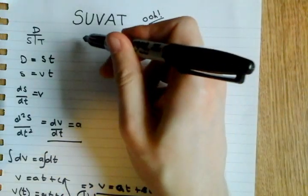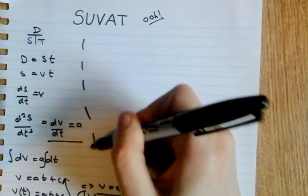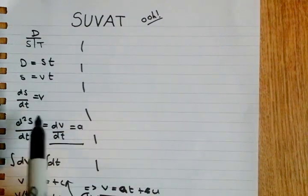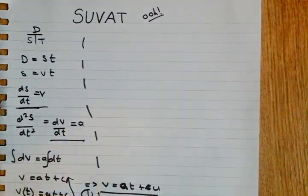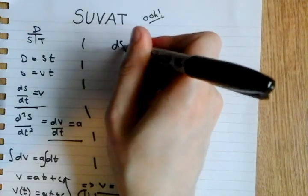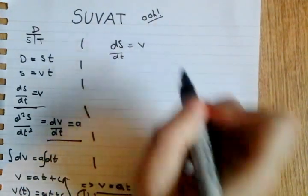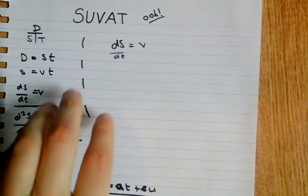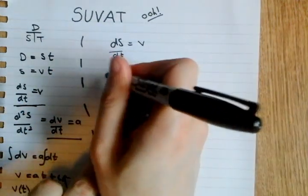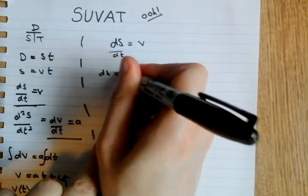Okie dokie, the second equation. We're going to use this part here, dS over dT is equal to V. Yep. So then what do we do? We rearrange it, dS is equal to V dT.